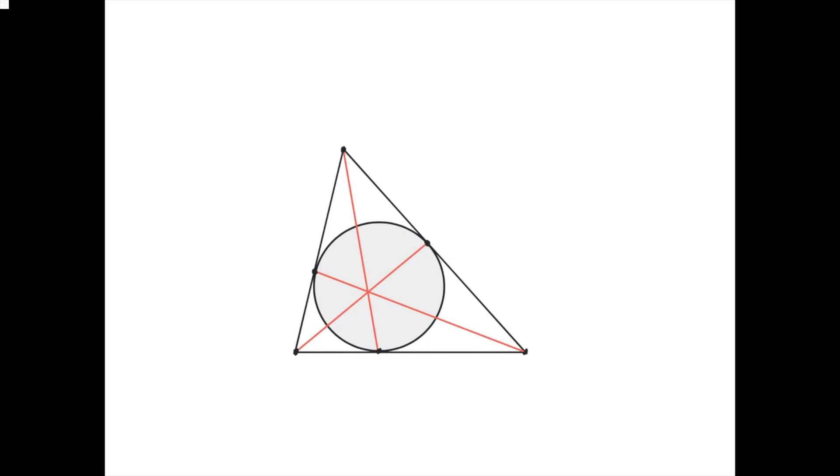Here is another consequence of Cheva's theorem. Suppose you have a triangle, and this is its incircle, and these three points are the tangency points of the incircle and the three sides of the triangle.